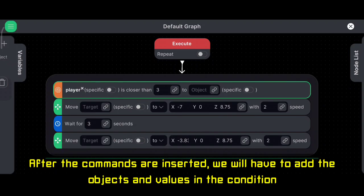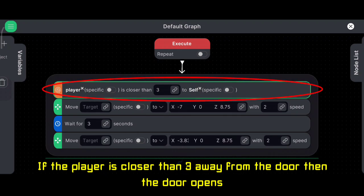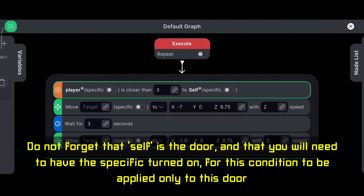After the commands are inserted, we will have to add the objects and values. In the condition, if the player is closer than three away from the door, then the door opens. Do not forget that self is the door and that you will need to have the specific turned on for this condition to be applied only to this door.